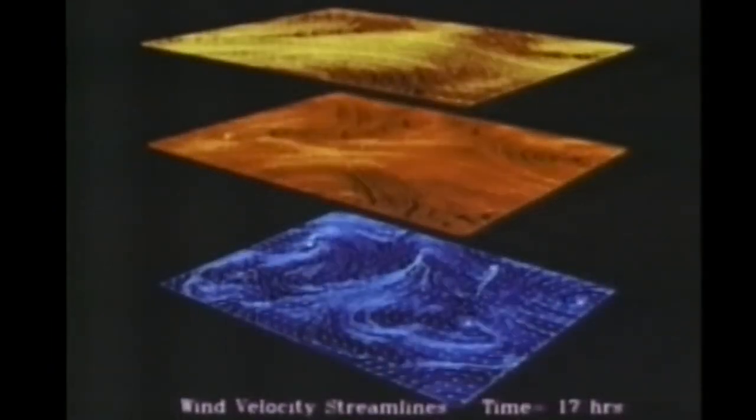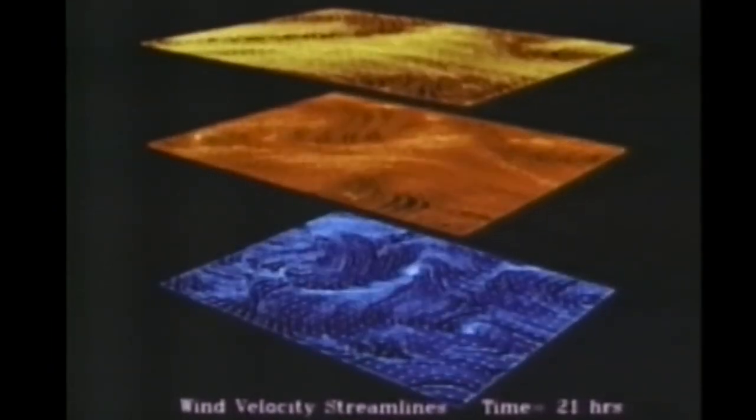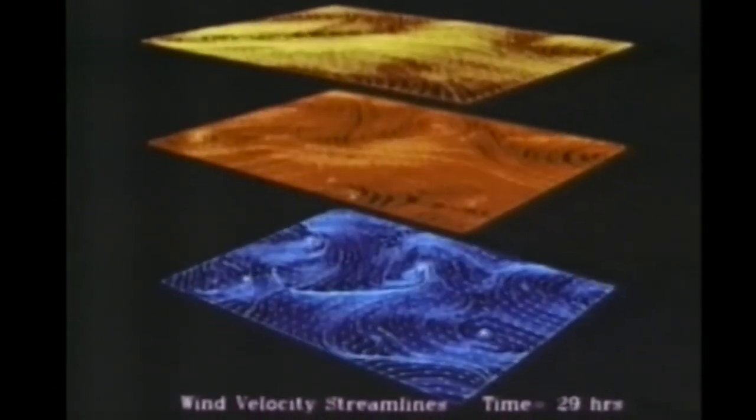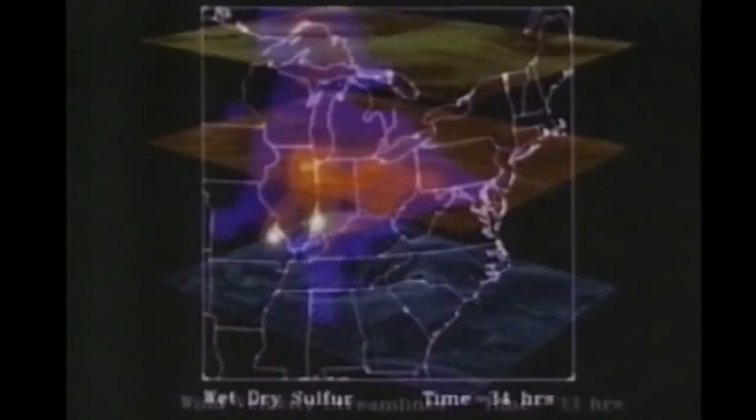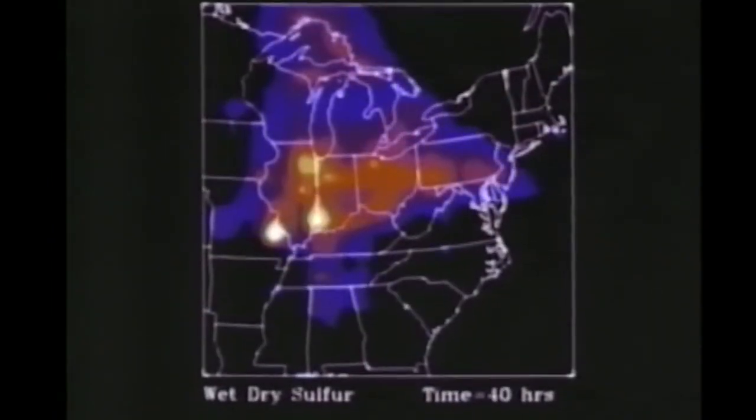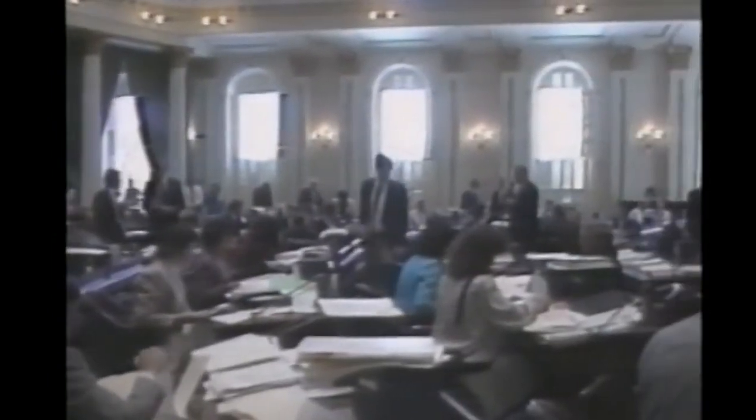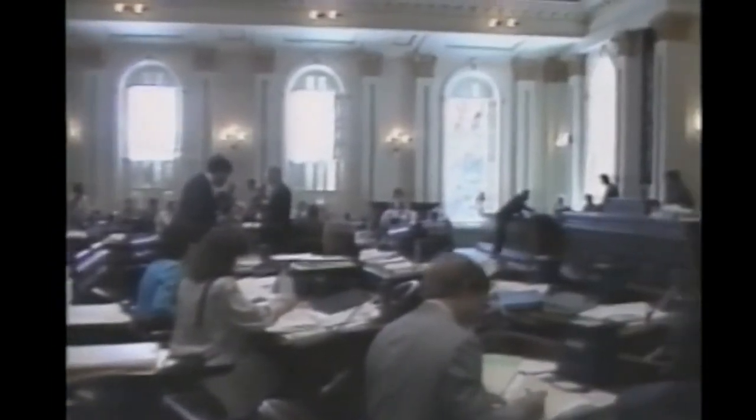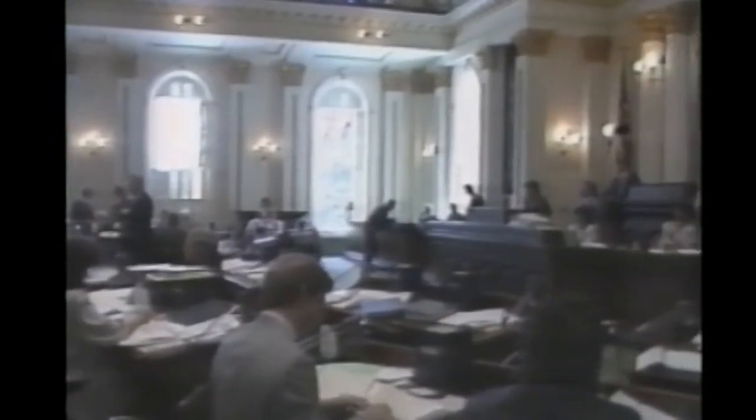Today, researchers have enhanced the model, doubling the number of trace gases calculated at nearly four times the number of grid points. On a large Cray YMP supercomputer, this model runs at a billion calculations per second. Rapid verification of this model will provide government with a sound scientific basis to guide the formulation of new, cost-effective emission policies.